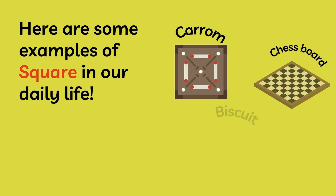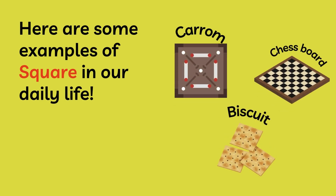This is a square. Examples of squares in our real life are carom, dice, biscuit, chess board, etc.